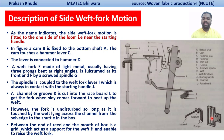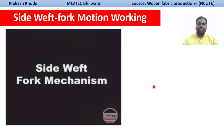The fork is undisturbed as long as the weft lies across the channel from the selvage to the shuttle box. Between the reed and the mouth of the box there is a grid, which acts as a support for the weft and enables it to raise the weft fork. We will now see how this weft fork motion works both in the presence and absence of weft.